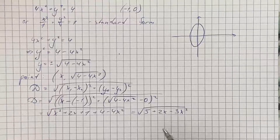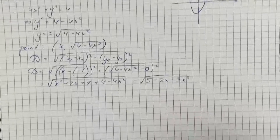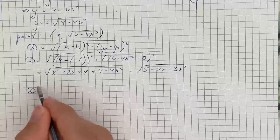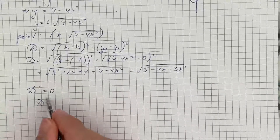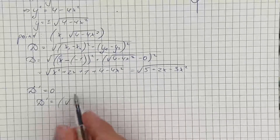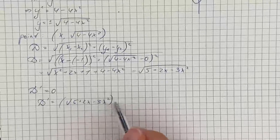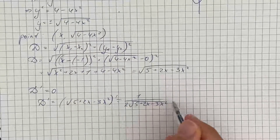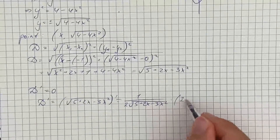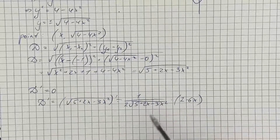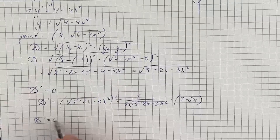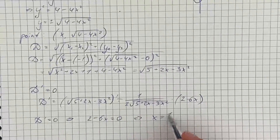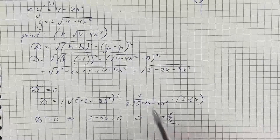Now we have to find the value of x such that the distance is maximum. For this, we take the derivative and set it equal to 0. The derivative of square root of 5 plus 2x minus 3x squared uses the chain rule: it's 1 over 2 times the square root of 5 plus 2x minus 3x squared, multiplied by the derivative of the inner function, which is 2 minus 6x. This fraction equals 0 only if the numerator equals 0, so 2 minus 6x equals 0, giving x equals 1 third.